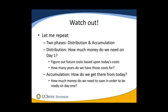Quick recap: there are two phases. The first phase is distribution — we ask how much money do we need on day one when we arrive at our goal. We figure out what future costs are based on today's costs by inflating today's present costs, and then ask how many years we have those costs for. The second phase is accumulation — we know how much money we need on day one of our goal, and we need to find out how much to save from today in order to be ready on day one.